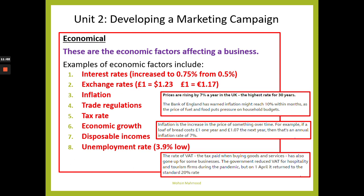You can also bring in Brexit for trade regulations, covering the costs of imports and exports. On tax rates, we've already gone over corporation tax. You could also talk about VAT — value-added tax, the tax paid when buying goods and services. The government reduced VAT for hospitality and tourism firms during the pandemic, but on the 1st of April it returned to the standard 20% rate.